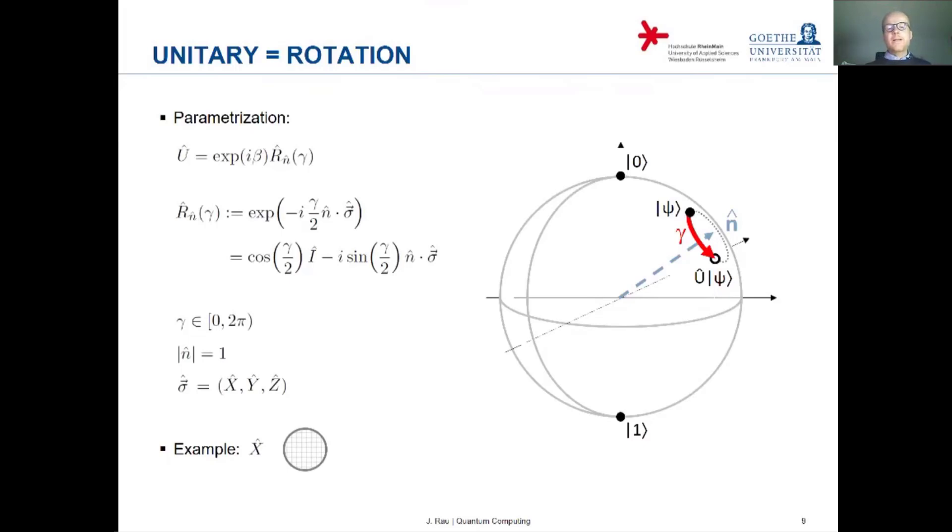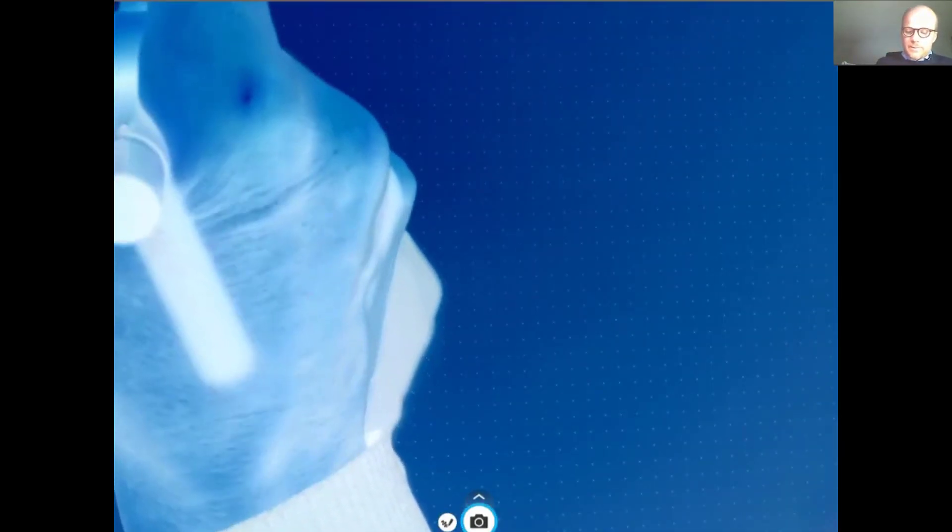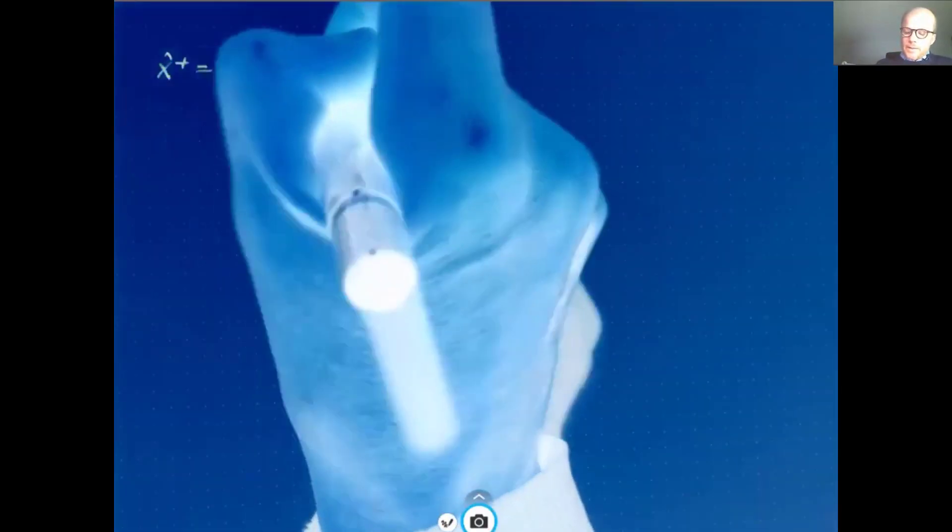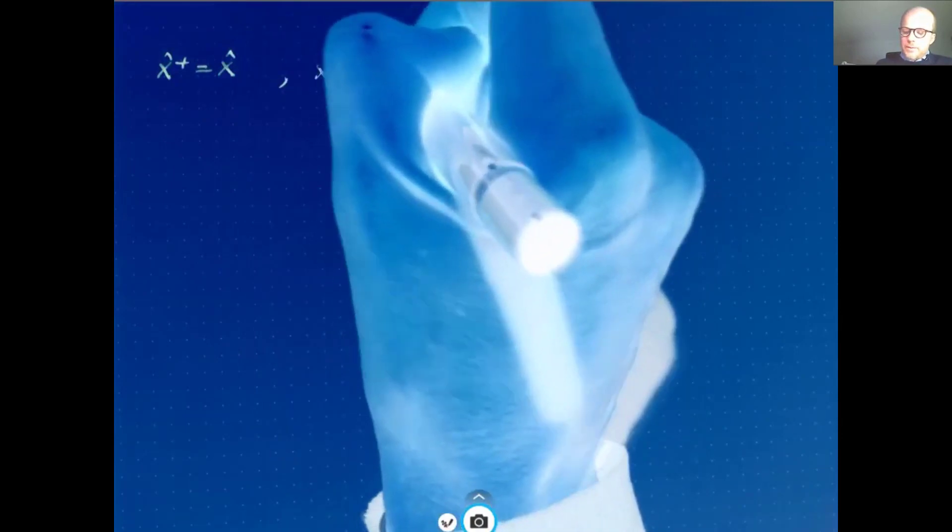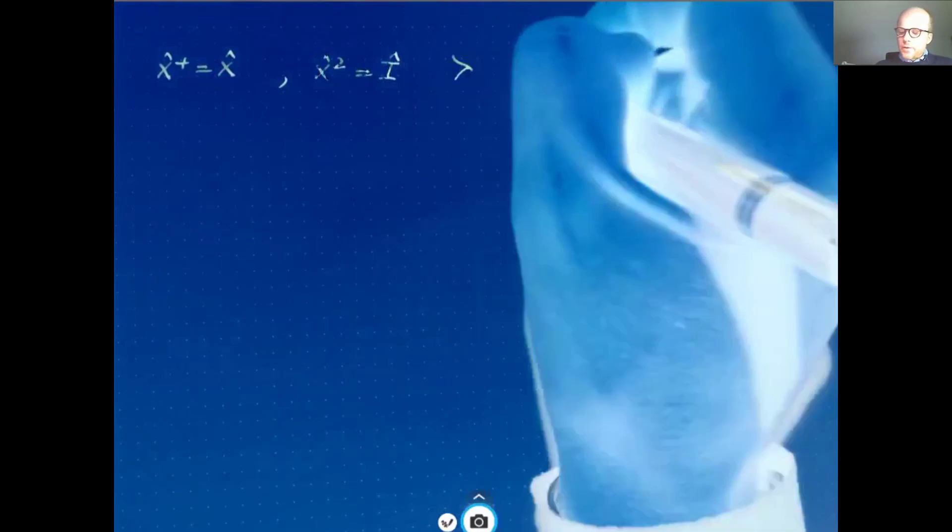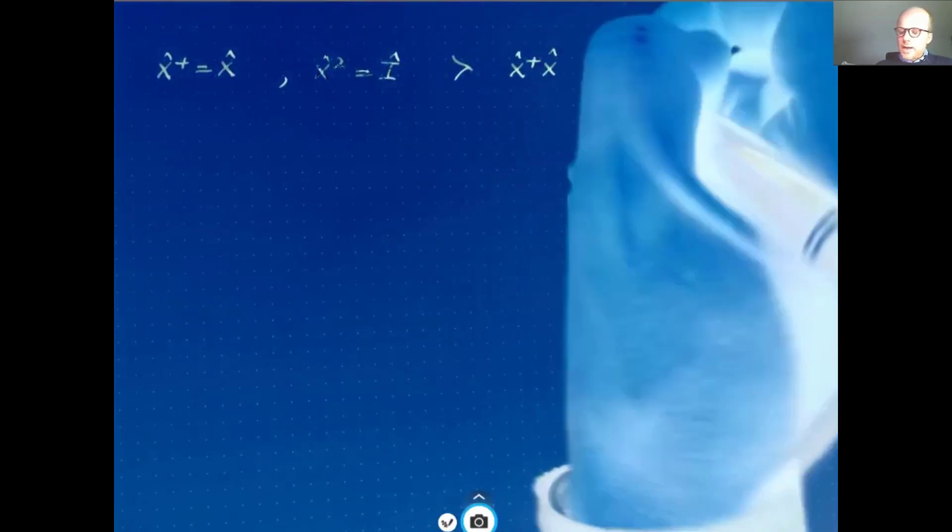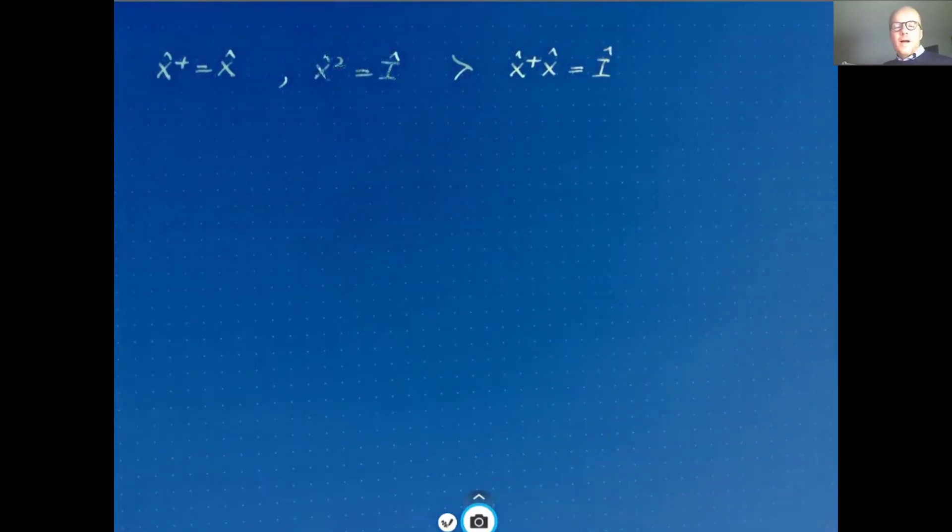Let's consider as an example, once again, the operator Pauli x, because the Pauli x is not just an observable, it's also at the same time a unitary operator. We know that the Pauli operator is Hermitian, but we also know that its square is equal to the unit operator. And this implies, of course, that x dagger x is equal to the unit operator, and that's the defining property of a unitary operator. So all the Pauli operators are unitary at the same time.